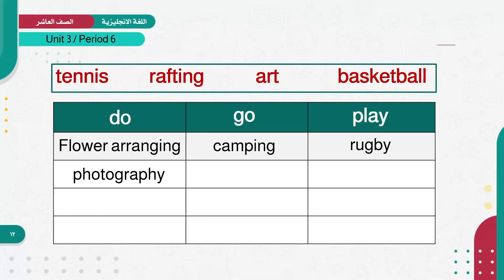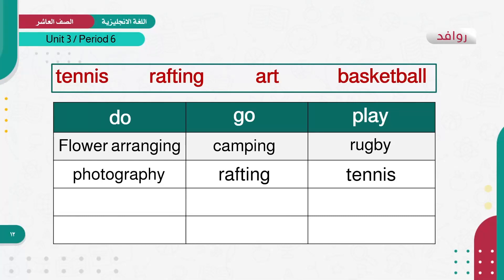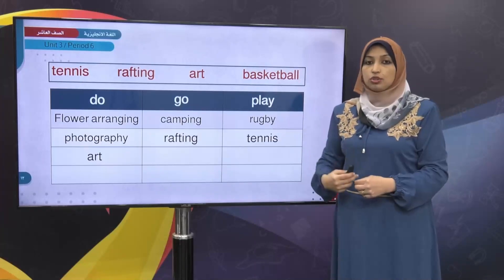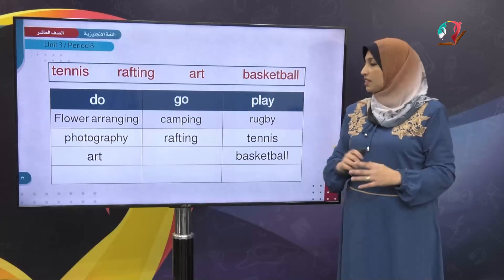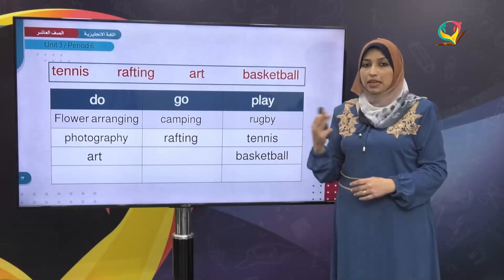Continuing: tennis goes with 'play tennis.' Rafting — going in inflatable boats on rivers — goes with 'go rafting,' because you travel to a different location like a river. Art requires steps and arrangements, so 'do art.' Basketball goes with 'play basketball.'